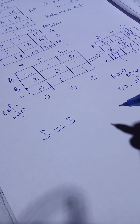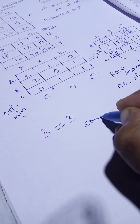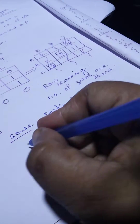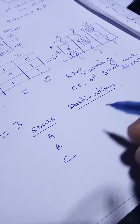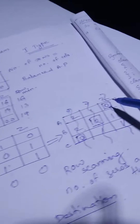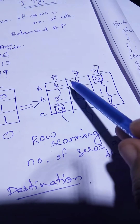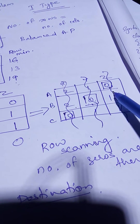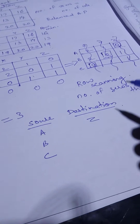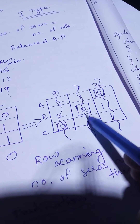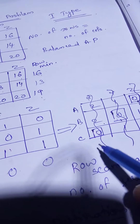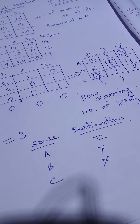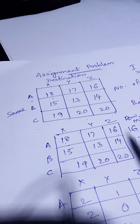To find the solution, write the source-to-destination assignments. Sources are A, B, C. Looking at the matrix: A has its squared zero at column Z, so A → Z. B has its squared zero at column Y, so B → Y. C has its squared zero at column X, so C → X.